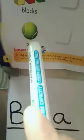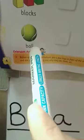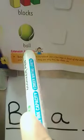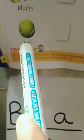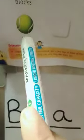Ball is a toy. It is round in shape. We can catch the ball. We can drop the ball. We can throw the ball. Very good. Ball is spelled as B-A-L-L, ball.